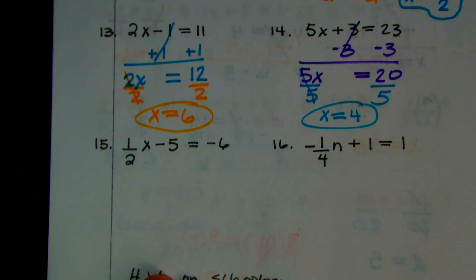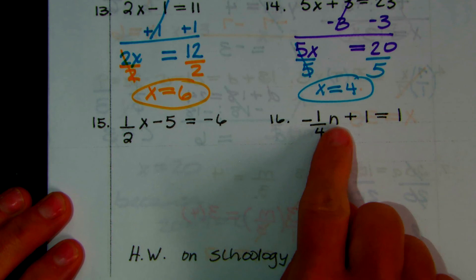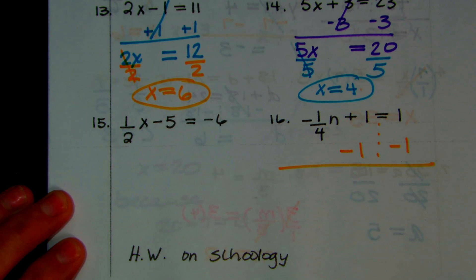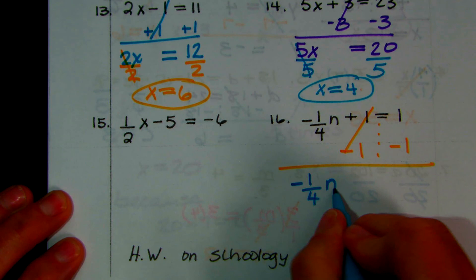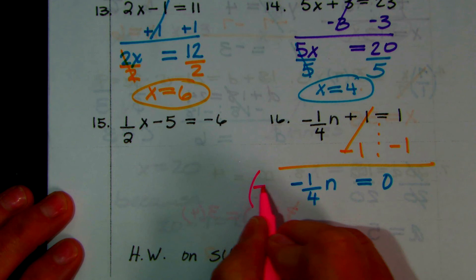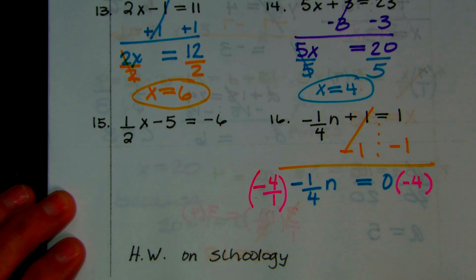I'll do number 16 first because it has a negative, and then you can try 15. Here's the term that has N — I need to get rid of the positive 1, so I'm going to subtract 1 from both sides. These add out, and I bring down negative 1/4 times N equals 1 minus 1, which is 0. Now, how do I get rid of the negative 1/4? We're going to multiply by the reciprocal. We need a negative times a negative to make a positive N. Negative 4 over 1 times negative 1/4 — the 4's cancel, negative times negative gives positive N. And 0 times negative 4 is 0.